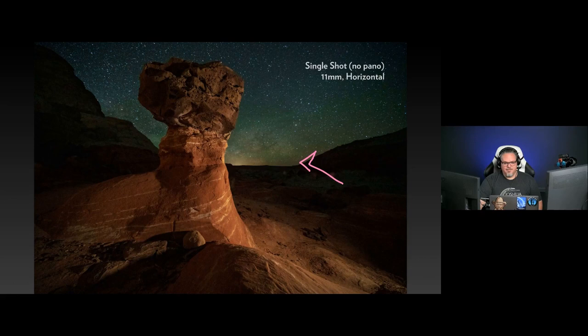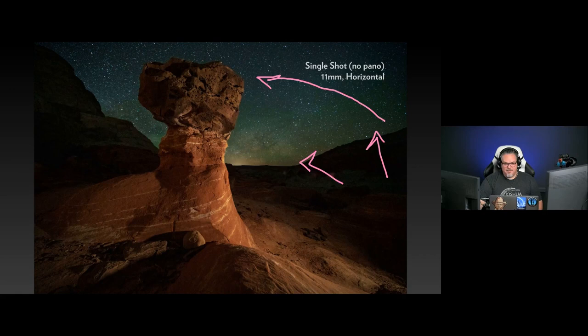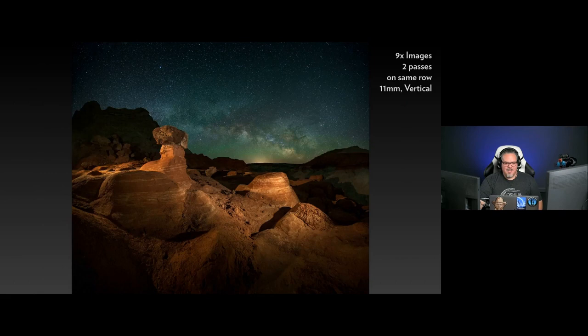This is a single shot of the Milky Way coming up nicely over the toadstools in Northern Arizona/Southern Utah — not a pano, just an 11mm lens. It's a great example of when one shot can get it in. I've got the core peaking up. If I wait a little bit longer, the core is going to sneak up and arc this way — and that's what I waited for. We went back down the path and shot something else, then came back up here.